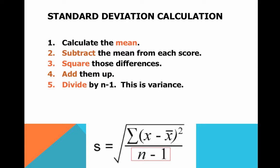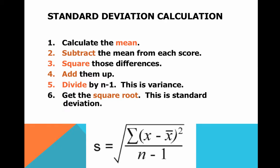At this point, with the numerator and the denominator, you've calculated the variance. The last step is simply taking the square root of the entire thing — which is your variance — and you've got the sample standard deviation.